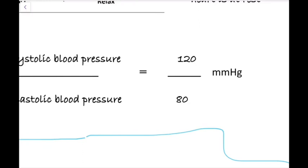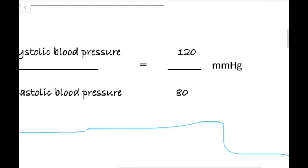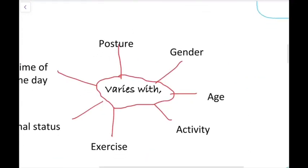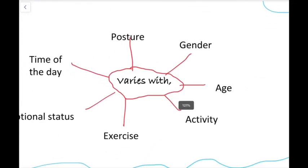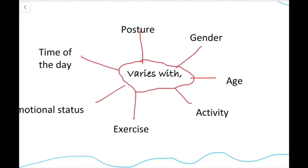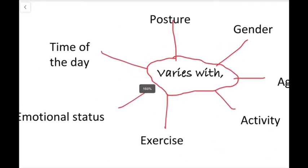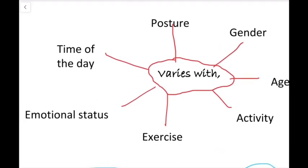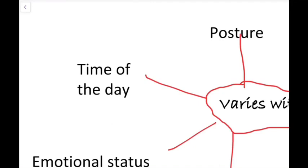Even though those values were mentioned, blood pressure varies with many factors — between individuals as well as within an individual at different times. One factor is the time of day. For example, during the night when you are asleep, your blood pressure is lower compared to during the day.